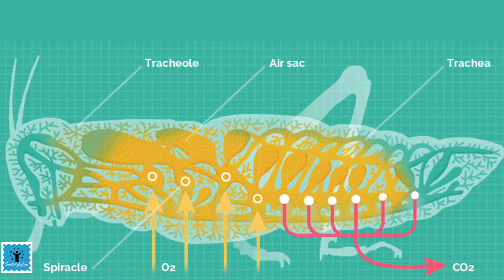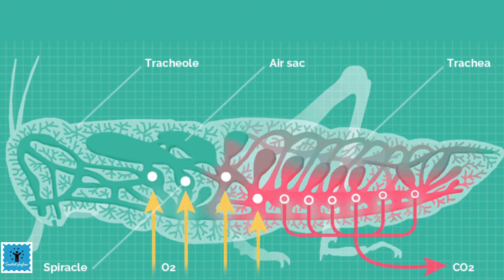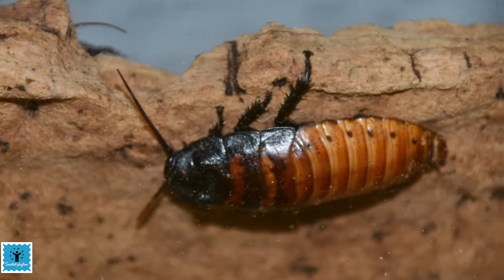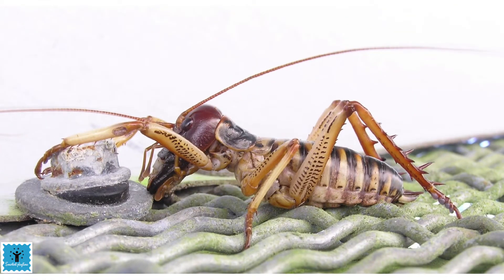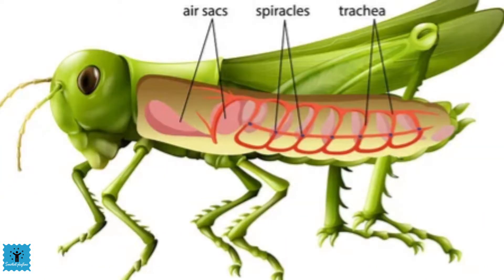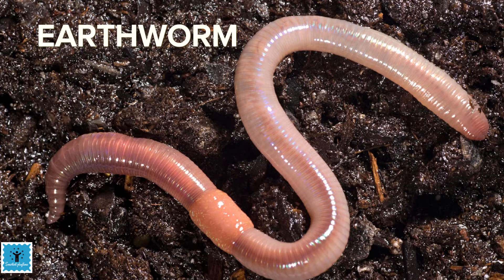These air tubes, also called trachea, are found only in insects, not in other animals. Most insects can open and close the spiracles. Insects with closed spiracles recycle the oxygen in the trachea and are able to survive without constant breathing.